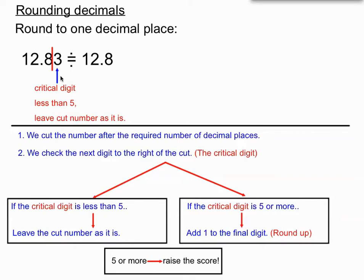Once I've cut this number I have approximated it. That symbol is called 'approximately equal.' So 12.83 is approximately equal to 12.8, and I write in brackets 'to one DP' or 'one decimal place.' DP is a shortcut, showing that 12.8 is an approximation of the original number.